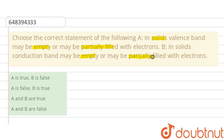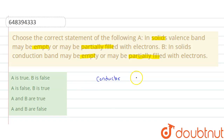Now, students, solids are generally of three types: one is conductor, one is semiconductor, and one is insulator.